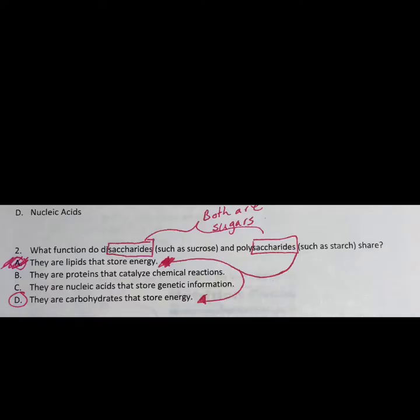Question number two: you had to read the question twice. The thing that should have stuck out was 'saccharide,' 'disaccharide,' or 'polysaccharide' — 'poly' means many, 'di' means two. Saccharide is just another fancy word for sugar. I made a mistake on question eight because I was working fast — I marked lipids store energy, but if I'd read the question I'd have seen it's carbohydrates that store energy. The answer should have been D — saccharide is your key.